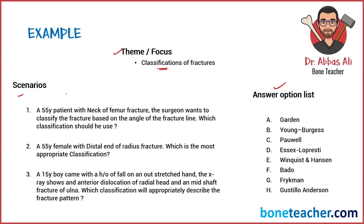The first scenario says a 55-year-old patient with a neck of femur fracture. The surgeon wants to classify the fracture based on the angle of the fracture line — which classification should he use? For neck of femur fractures, two common classifications come to mind: Garten's and Powell's. The hint here is the angle of the fracture line, and the classification that uses that criterion is Powell's. So the answer for scenario one is C — Powell's classification.